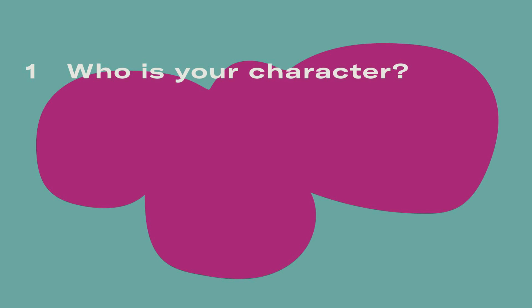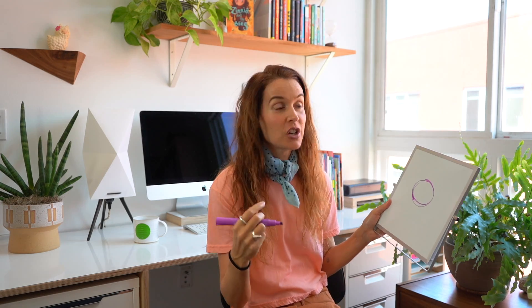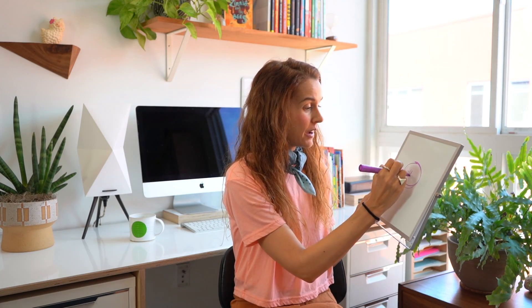We're going to talk about five questions that you can ask your character. The first one is: who is your character? You have some decisions to make — are they a human, are they an animal, how old are they? For this pre-writing activity I'm going to do a bubble chart, but you can do a sketch with arrows or just write notes — whatever works for you. My character is a rabbit.